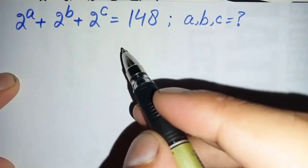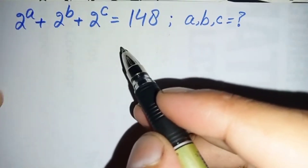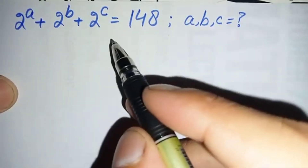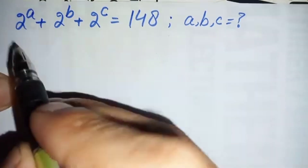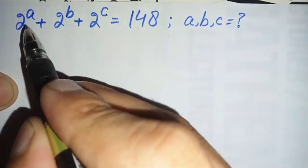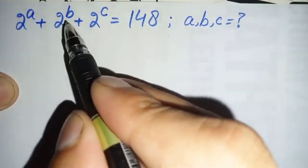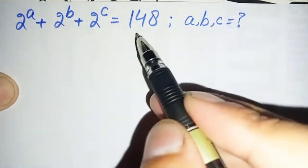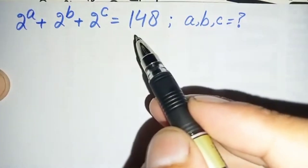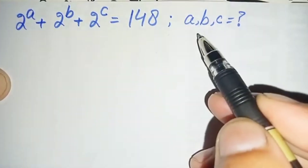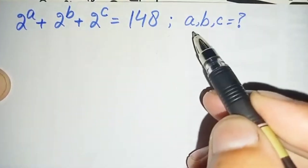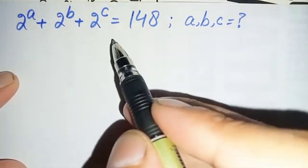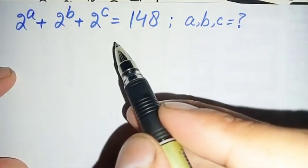Hello everyone, happy to see you in this new video. We will solve this nice exponential equation: 2 raised to power a, plus 2 raised to power b, plus 2 raised to power c is equal to 148. We will try to find the values of a, b, and c.